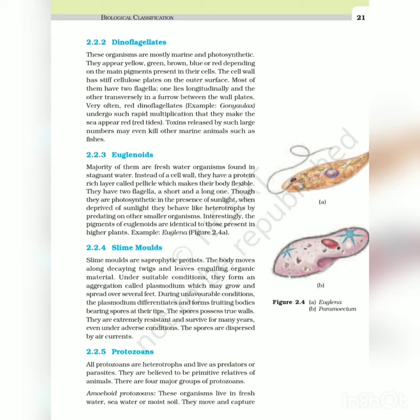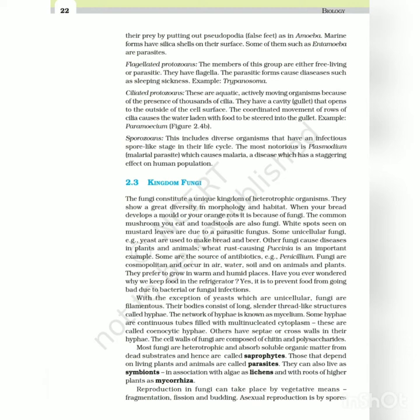Protozoans - all protozoans are heterotrophs and live as predators or parasites. They are believed to be primitive relatives of animals. There are four major groups of protozoans. Amoeboid protozoans - these organisms live in fresh water, sea water or moist soil. They move and capture their prey by putting out pseudopodia, or false feet, as in amoeba. Marine forms have silica shells on their surface. Some of them, such as Entamoeba, are parasites.